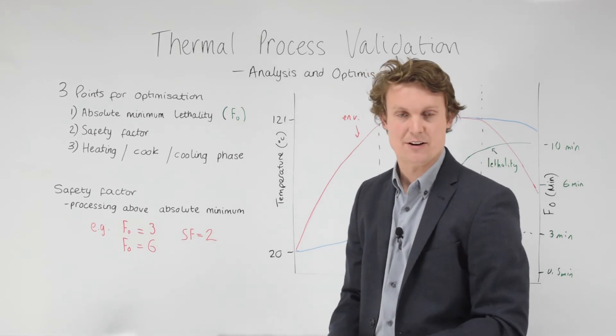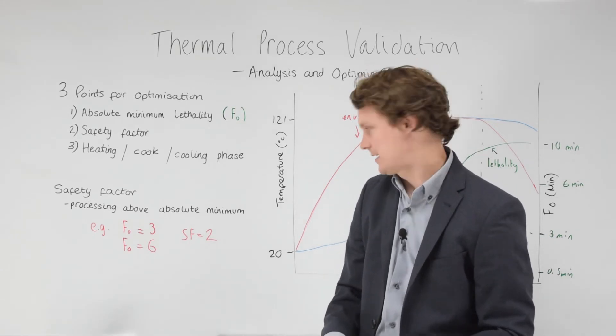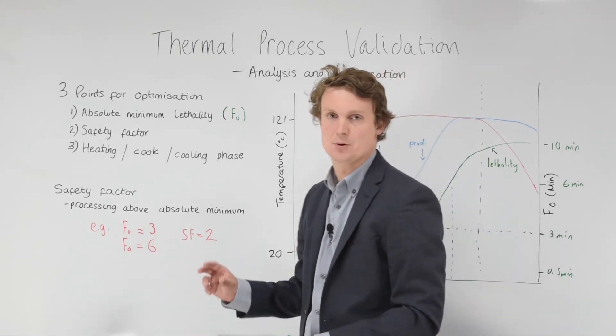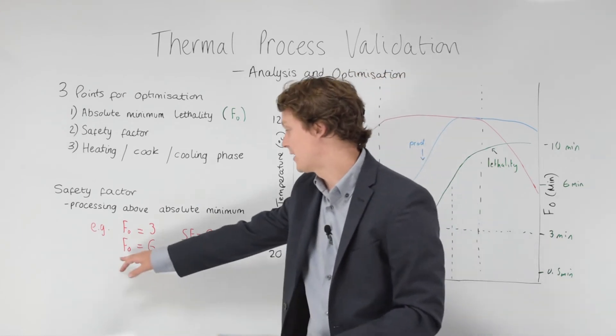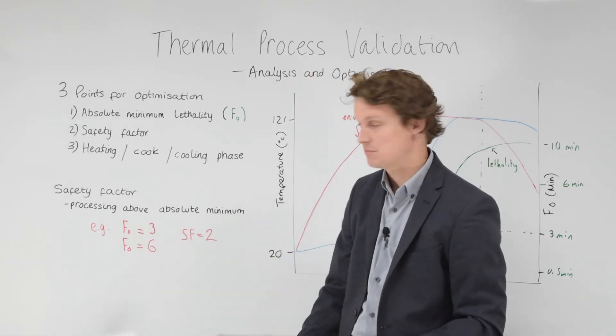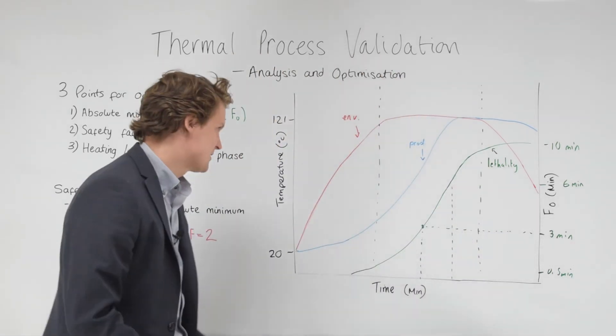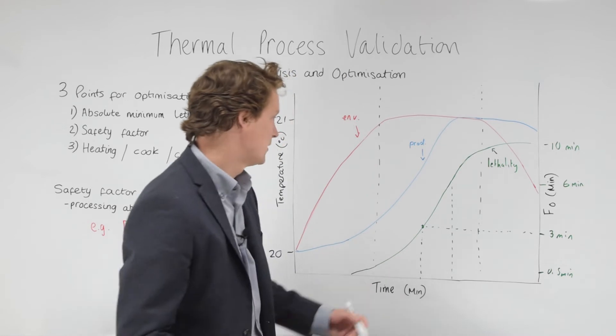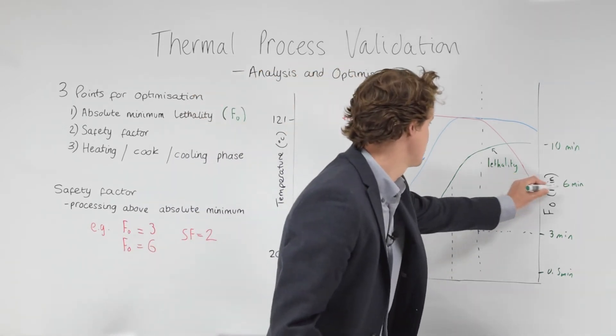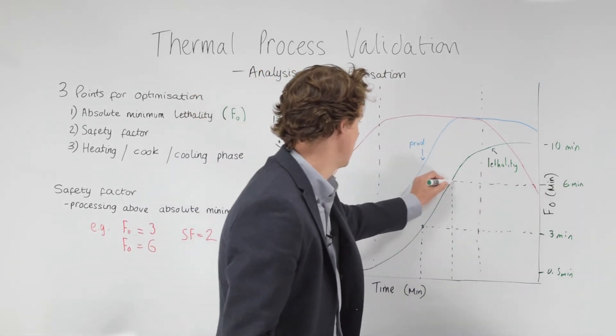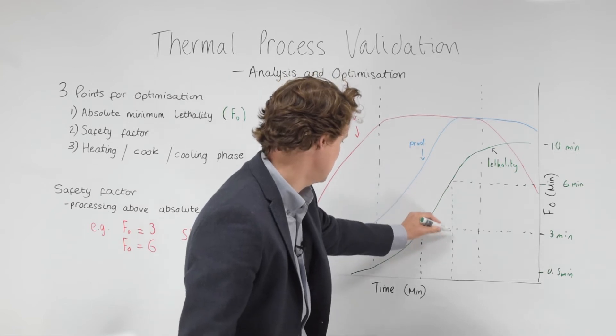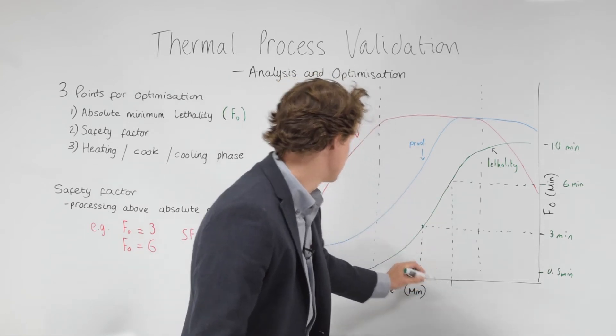If we're really, really controlled and we're very confident in our validation and our process, then we might have something a bit smaller. Maybe we'll have an in-house target of F0 equals four instead of six. But in this example, we've gone for the typical, quite a typical target of six minutes lethality. Let's plot this on here. Six minutes of lethality, a little bit further into the process.